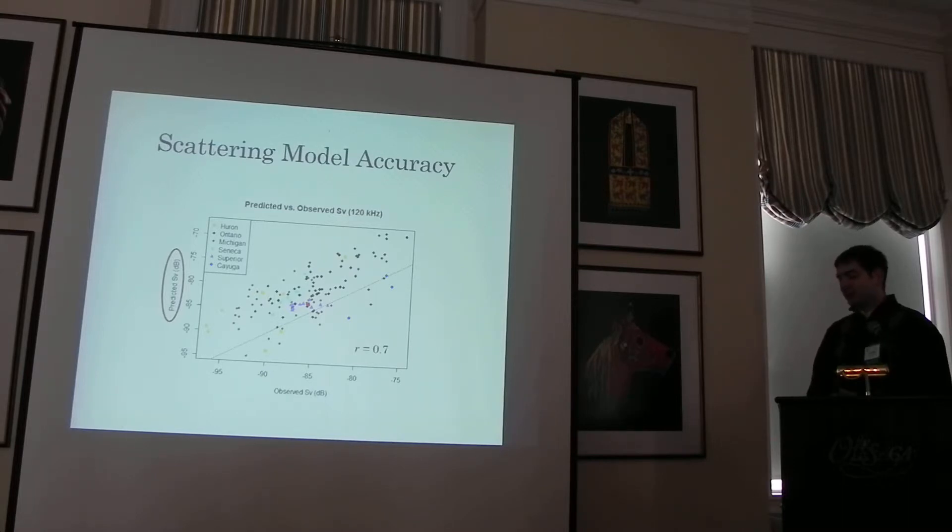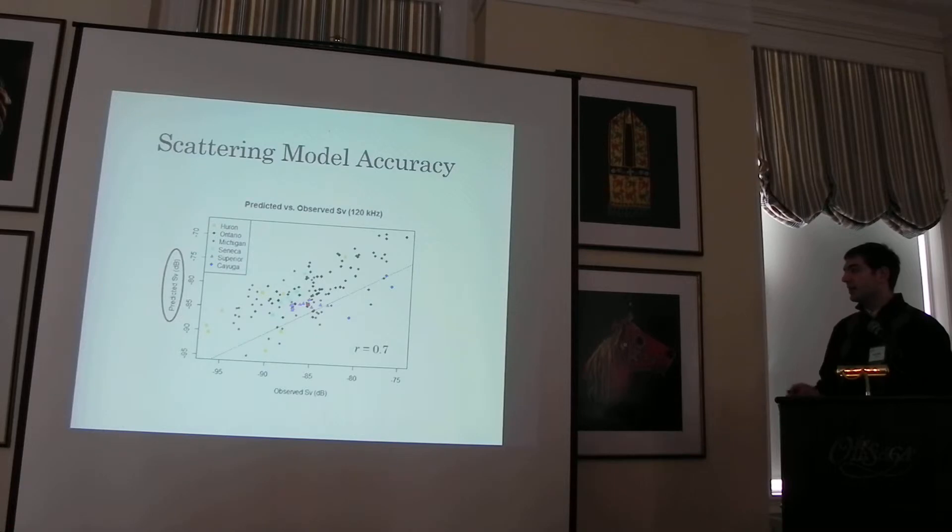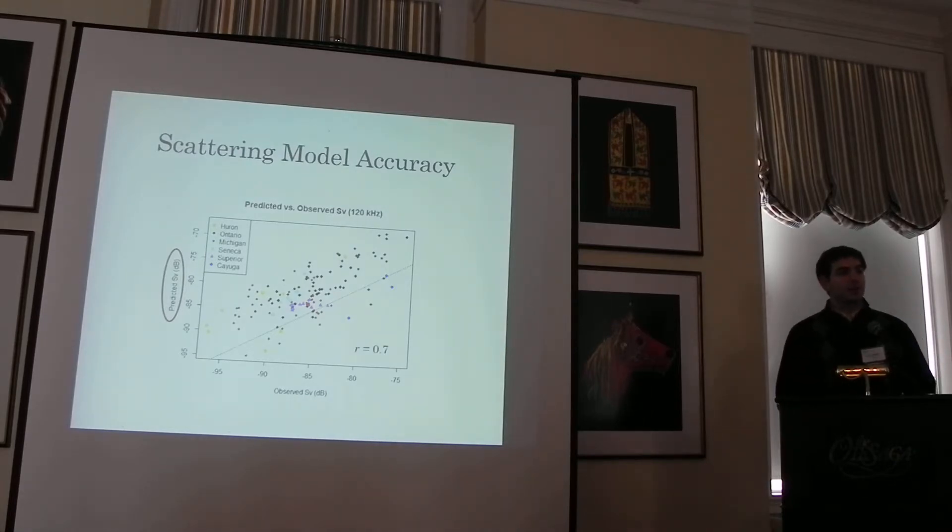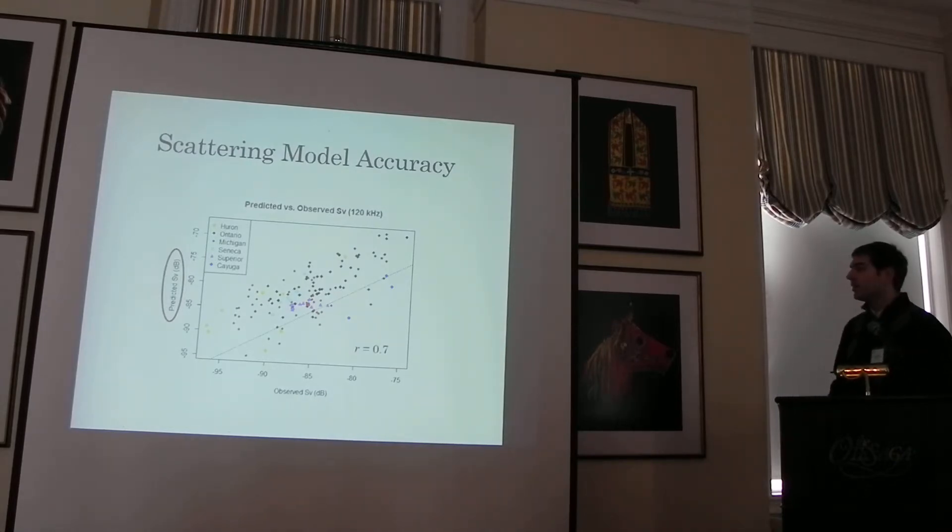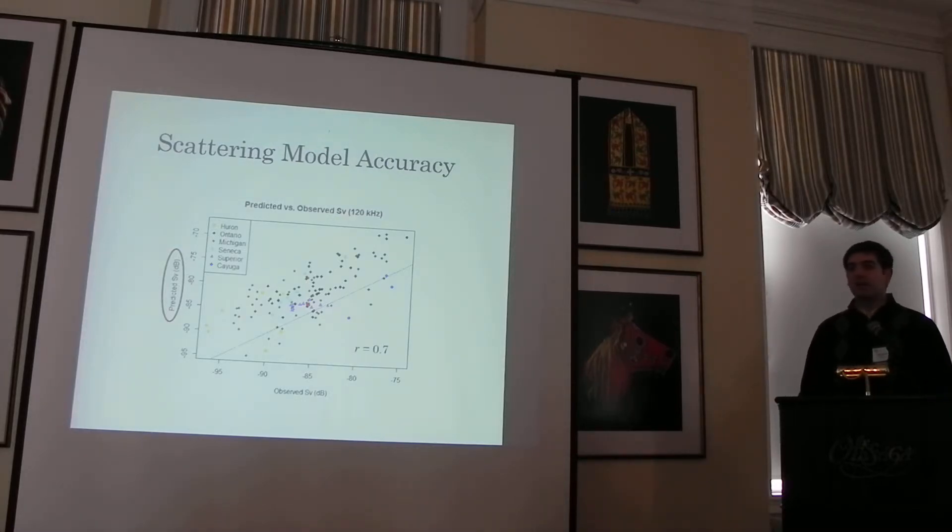Scattering model accuracy. We took the theoretical scattering model and predicted the amount of backscatter based on, this is a forward problem, predicted the backscatter based on the size structure and the number of mysids there. Actually the model over-predicts acoustic backscatter in most cases, which means it's biased for higher target strength than we would expect. However, the relationship is not significantly different from a one-to-one slope. So that's encouraging to look at what's actually causing that higher target strength.